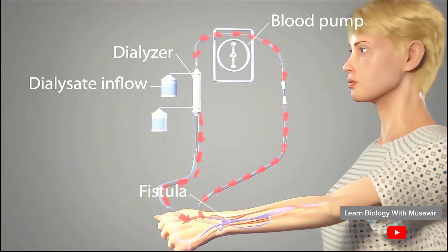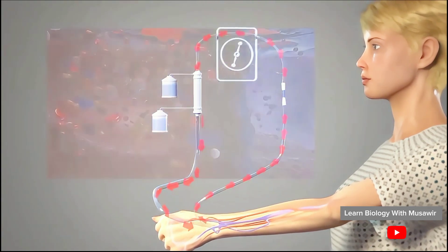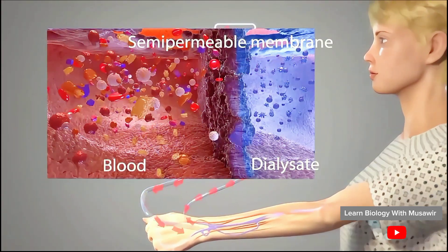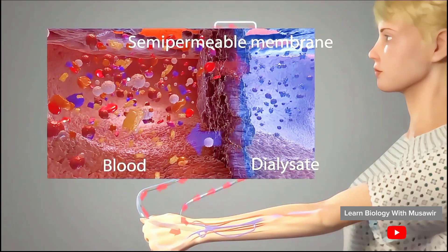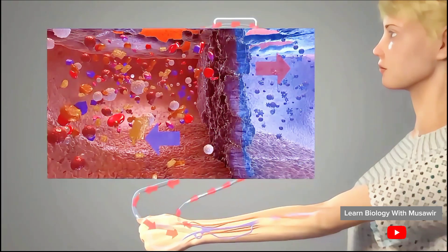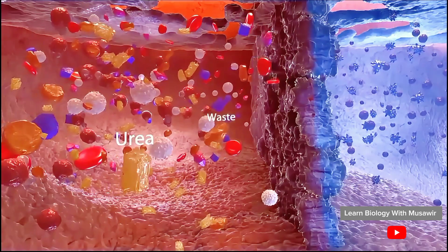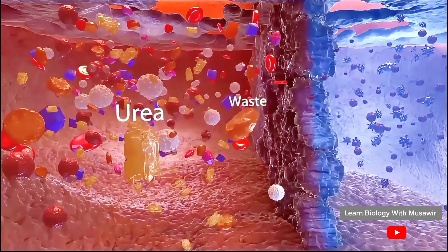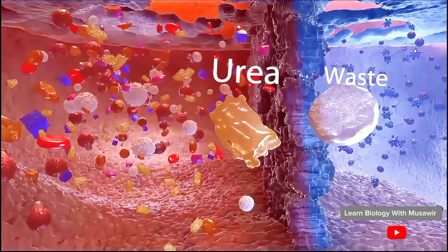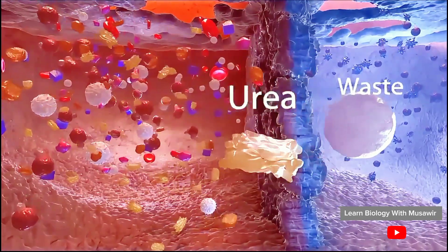There, blood and dialysate, or dialyzing solution, flow across a semi-permeable membrane in an enclosed container. This semi-permeable membrane lets urea and other wastes move from the blood into the dialysate. This movement takes place by diffusion because of the difference in their concentrations.